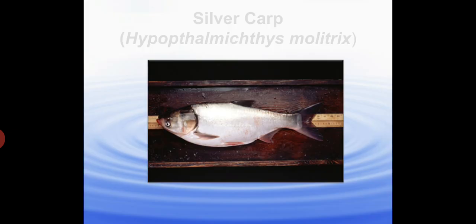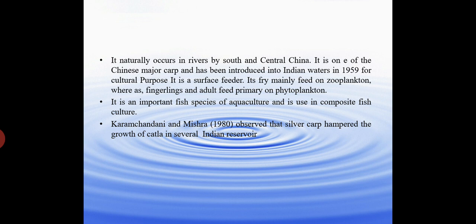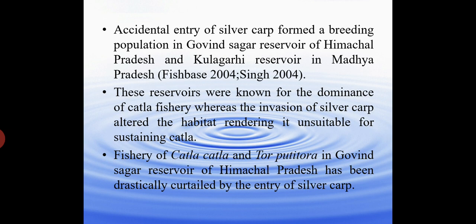The next exotic fish is Silver Carp, Hypophthalmichthys molitrix, which naturally occurs in rivers of South and Central China. It is one of the Chinese major carps and was introduced into Indian waters in 1959 for aquaculture purposes. Karamchandani and Mishra observed that Silver Carp hampered the growth of Katla in several Indian reservoirs. Accidental entry of Silver Carp formed a breeding population in Gobind Sagar Reservoir of Himachal Pradesh and Kulgari Reservoir of Madhya Pradesh, altering the habitat and drastically curtailing Katla and Tor putitora fishery.